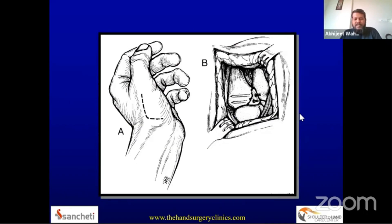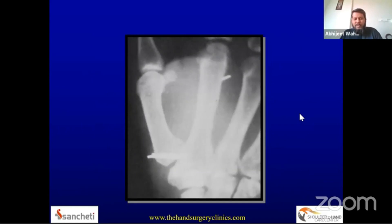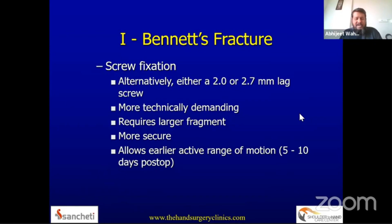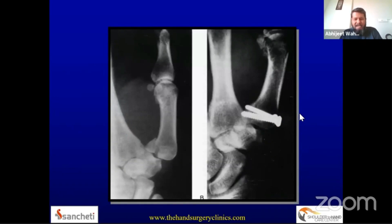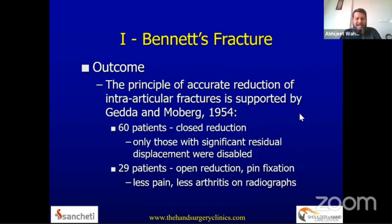The most convenient approach is the Wagner approach — over the subcutaneous border of the first metacarpal with an L-shaped extension — and then open reduction and fixation of the fracture. Screw fixation is also possible but more technically demanding; the fragment must be large enough to avoid shattering during drilling, and the reduction must be accurate. Fixation can be accomplished with one or two screws depending on fragment size; two screws are always recommended to avoid rotational instability.